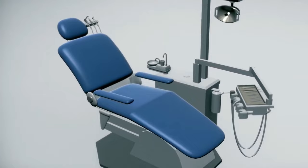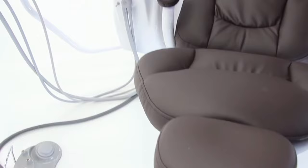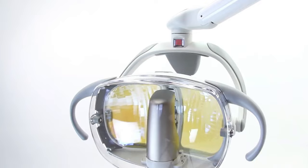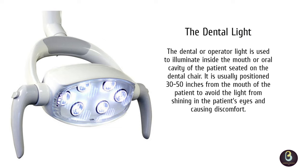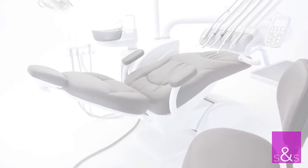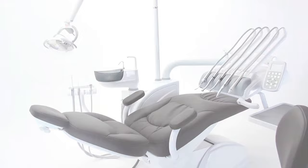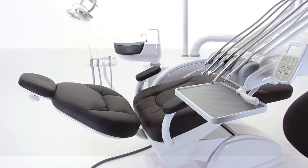First, we look into the dental light attachment. The dental or operator light is used to illuminate inside the mouth or oral cavity of the patient seated on the dental chair. It is usually positioned 30 to 50 inches from the mouth of the patient to avoid the light from shining in the patient's eyes and causing discomfort. The light has dimmer switches so that the intensity of the light may be adjusted. Protective barriers such as plastic wrap or aluminum foil are placed on the handles and the switches of the light. The lights are frequently cleaned and movable parts are lubricated during preventive maintenance.